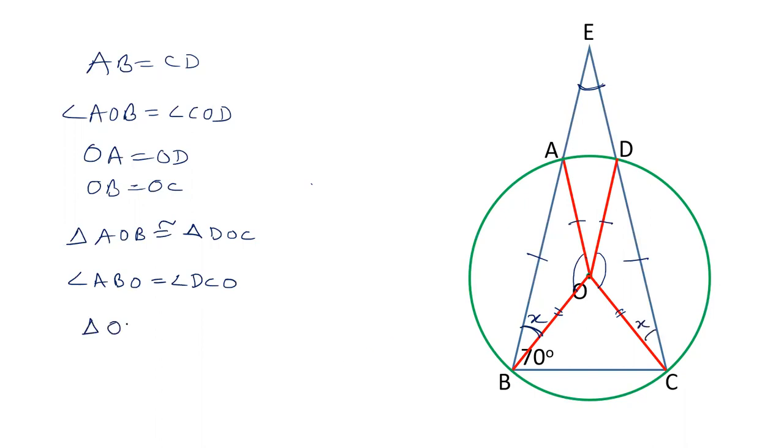Now in triangle OBC, OB is equal to OC. And therefore angle OBC is equal to angle OCB.